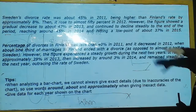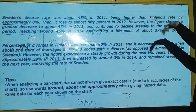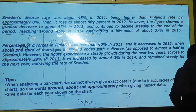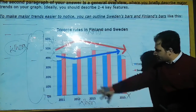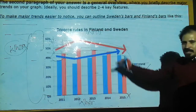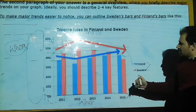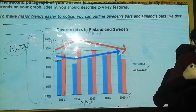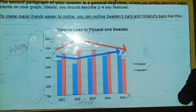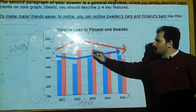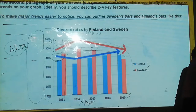However, the figure showed a gradual decrease to about 47% in 2013. If you look at 2013, this is a gradual decrease — almost 2-3% decrease. So Sweden's divorce rate showed a decrease in 2013, reaching approximately 47%.